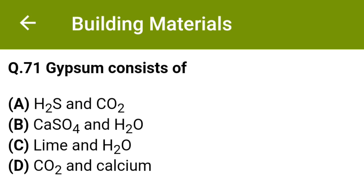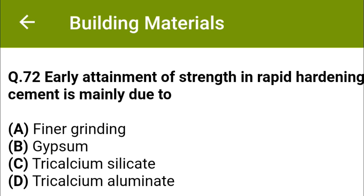Early attainment of strength in rapid hardening cement is mainly due to: option A, finer grinding; option B, gypsum; option C, tricalcium silicate; option D, tricalcium aluminate. The correct answer is option A, finer grinding.